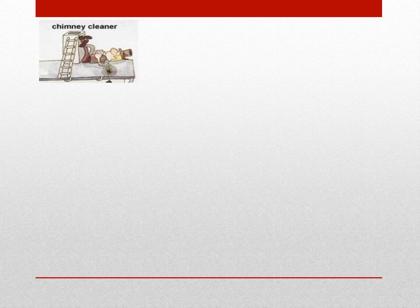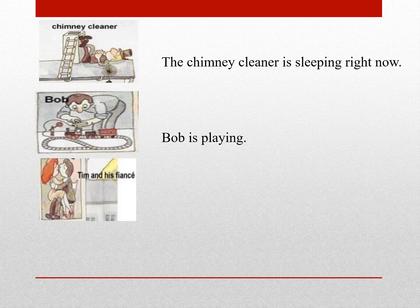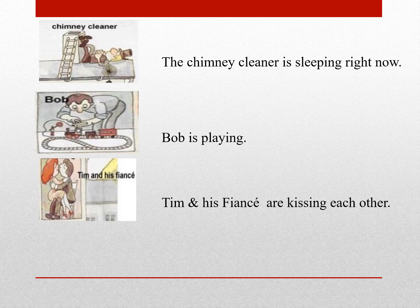حالا با توجه به عکسهایی که نشون داده میشه، ببینید اون فرد همین الان در حال چه کاریه و جملهش رو بگید. Chimney cleaner کسیه که دودکش ها رو تمیز میکنه. What is the chimney cleaner doing؟ The chimney cleaner is sleeping right now. What is Bob doing؟ Bob is playing. What are Tim and his fiancée doing؟ Tim and his fiancée are kissing each other.